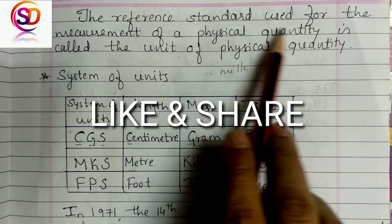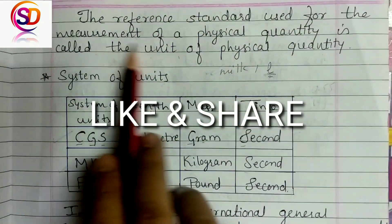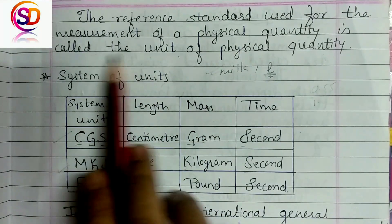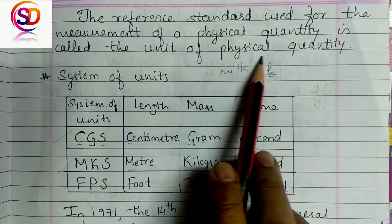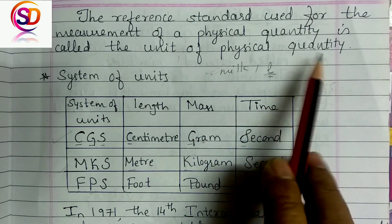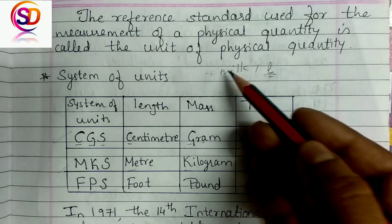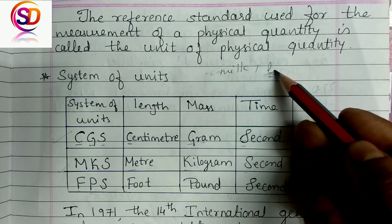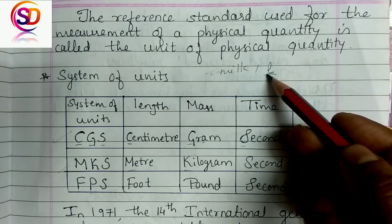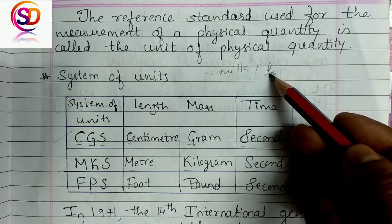The reference standard used for the measurement of a physical quantity is called the unit of that physical quantity. For example, if you measure milk in terms of liters, this is called a reference standard and we call it a unit.